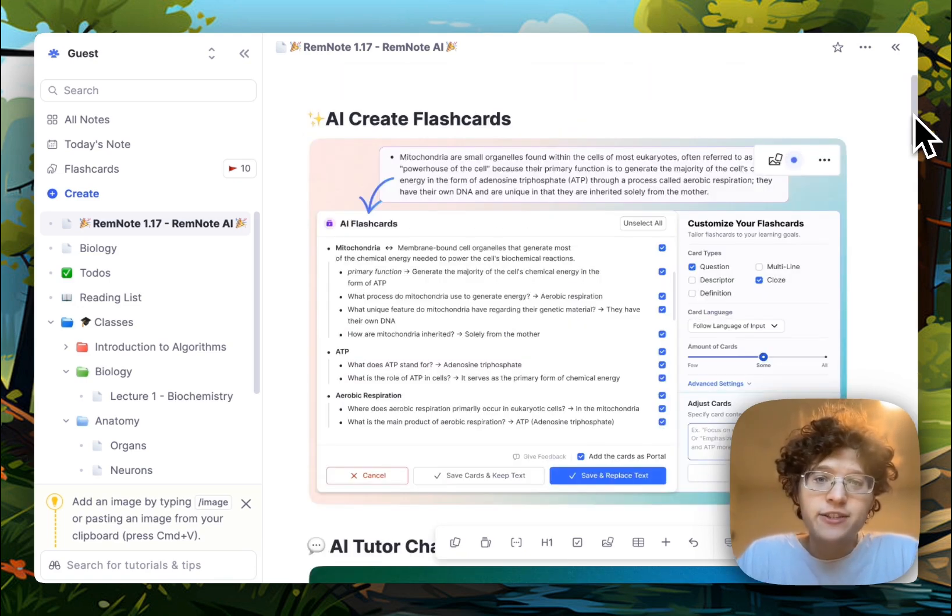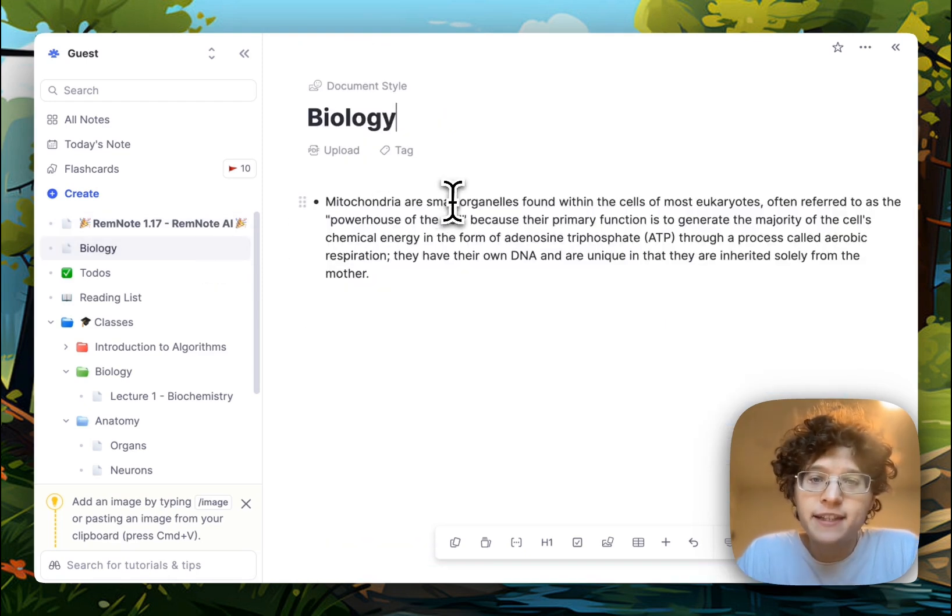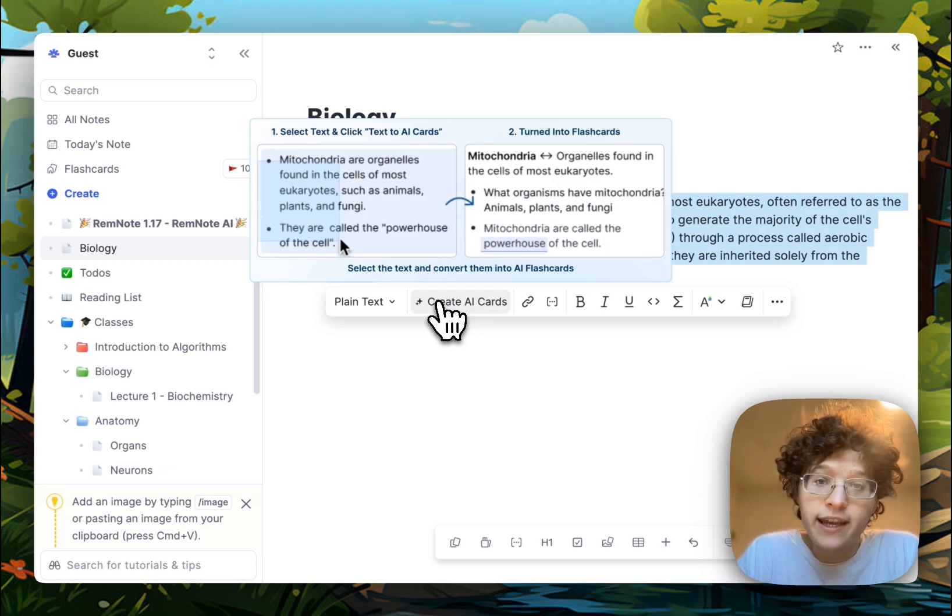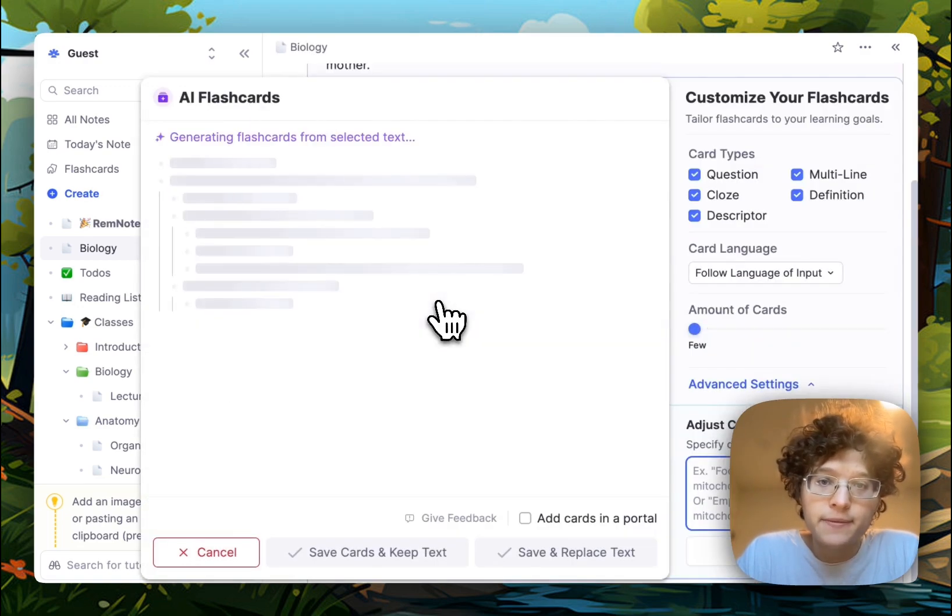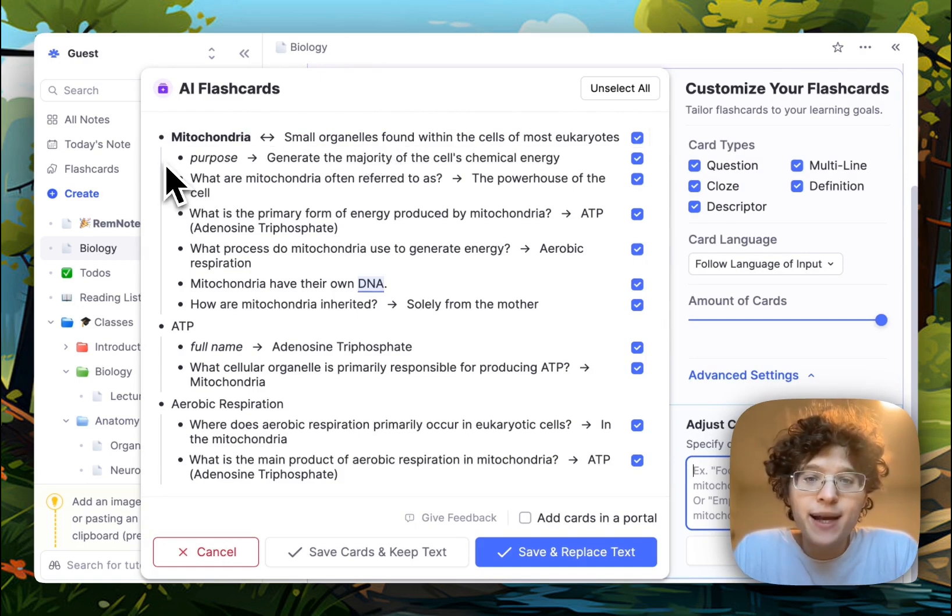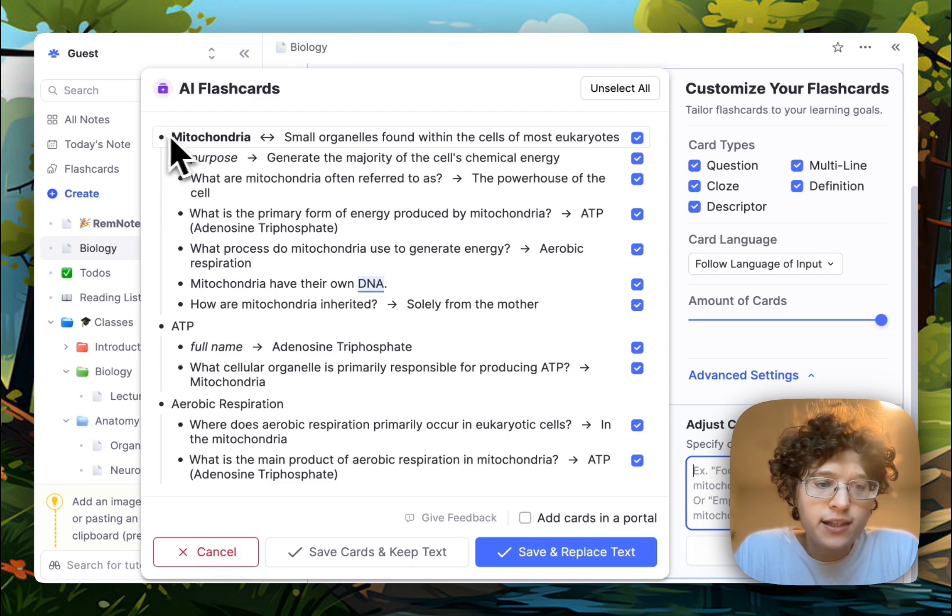First, you can now AI generate flashcards directly from any text, PDF, or web page. Go to a document in RemNote and paste in some text. After pasting it in, drag your mouse to select the text that you want to generate cards from, and press the new Create AI Cards button on the pop-up here. You'll see that the cards immediately appear on your screen. They're displayed in the same format as in the editor here, where each bullet is its own flashcard.